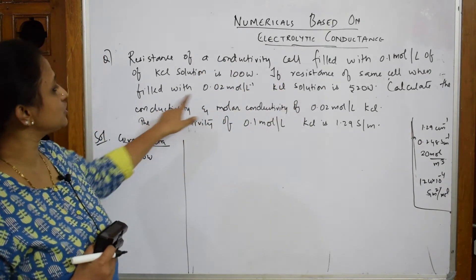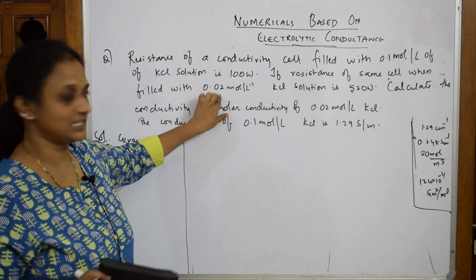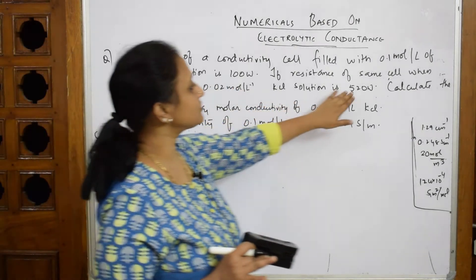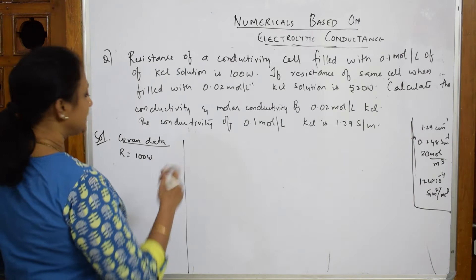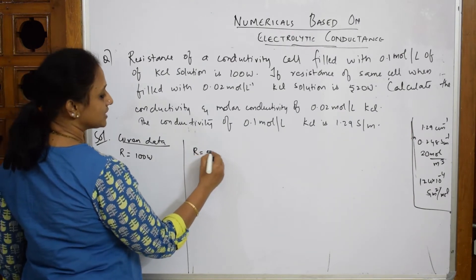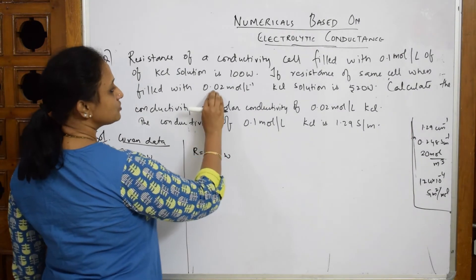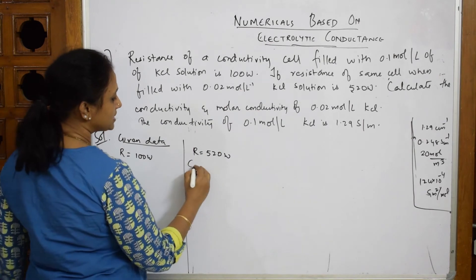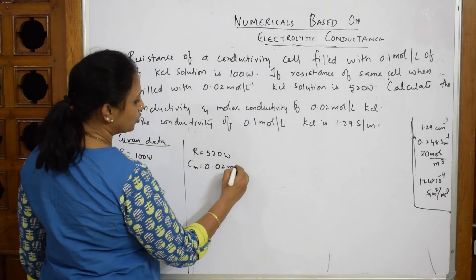The resistance of the same cell when filled with 0.02 molar KCl solution is 520 ohms. In the second stage, the resistance is 520 ohms and the concentration is 0.02 mole per liter.